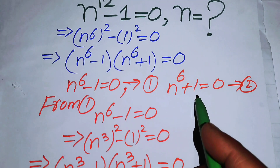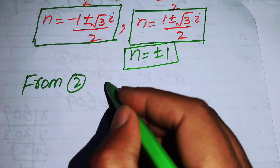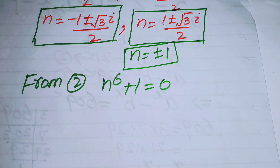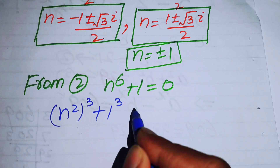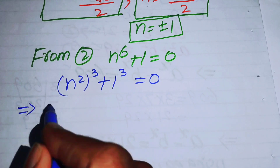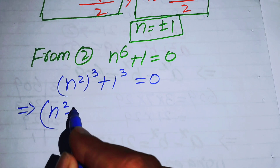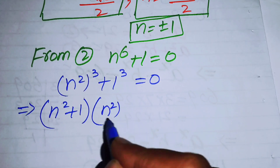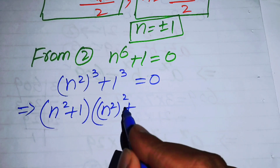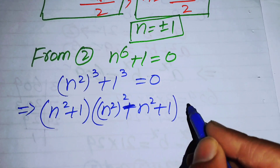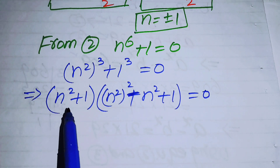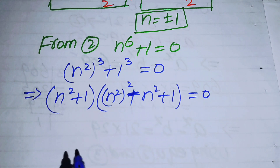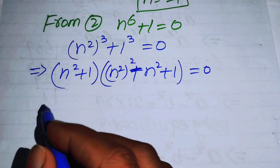Equation 2 is n^6 + 1 = 0. We rewrite this as (n^2)^3 + 1^3 = 0 and apply the sum of cubes formula: a^3 + b^3 = (a + b)(a^2 - ab + b^2). This gives (n^2 + 1)(n^4 - n^2 + 1) = 0, creating two more cases.